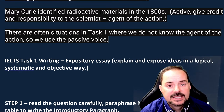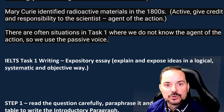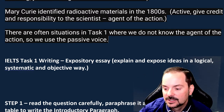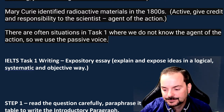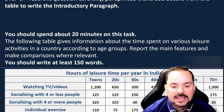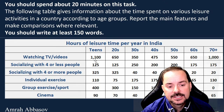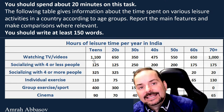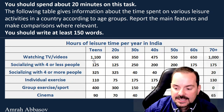With tense, it's the same logic. If the table is from 2005 and you're talking about what those people did in 2005, then it's past tense. There's logic for grammar — always stick to that. In this case, there are a lot of active sentences here because 'teens are watching TV,' not 'TV was watched by teens.'